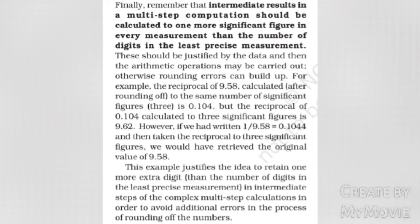Remember that intermediate results in a multi-step computation should be calculated to one more significant figure than the number of digits in the least precise measurement, and then rounded off at the end. Otherwise, rounding errors can build up. For example, the reciprocal of 9.58 rounded to 3 significant figures is 0.104, and the reciprocal of 0.104 to 3 significant figures is 9.62. However, if we write 1/9.58 = 0.1044 and then take the reciprocal to 3 significant figures, we retrieve the original value 9.58. This justifies retaining one extra digit in intermediate steps of complex multi-step calculations.